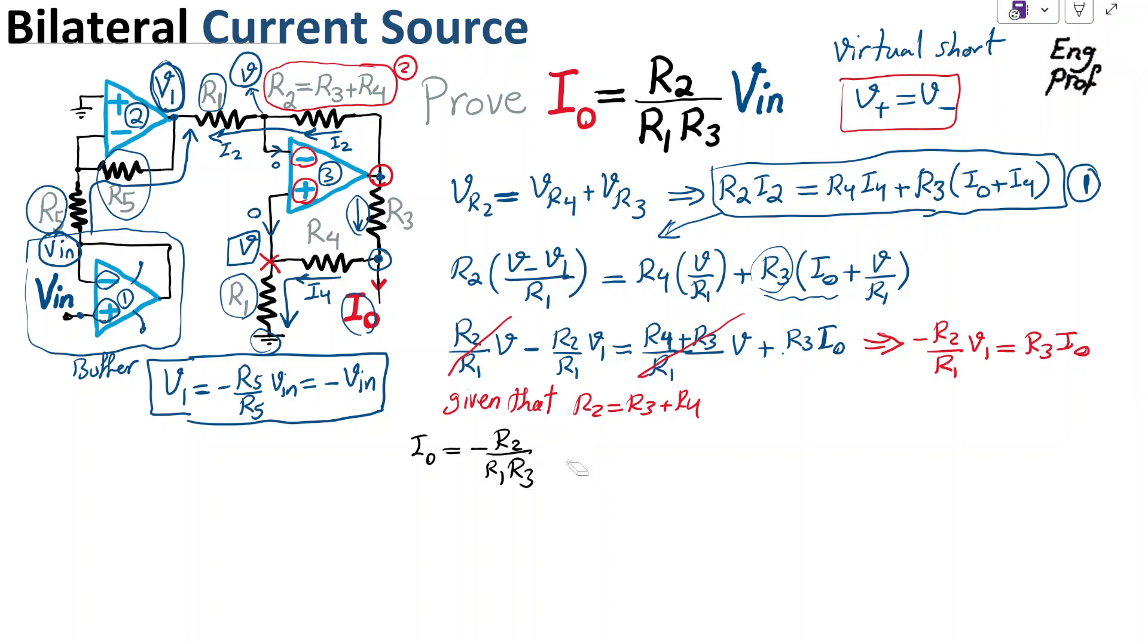Well, what is the value of V1? We just found the V1 here, so if I name this number 3, so using equation 3, we know that V1 is negative V_in, so I_out is equal to R2 over R1, R3 times V_in. That's exactly what we wanted to find.